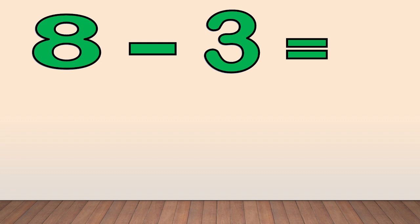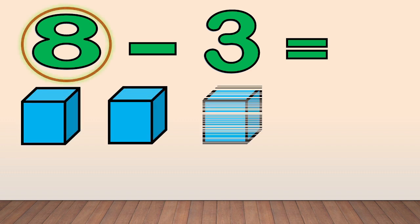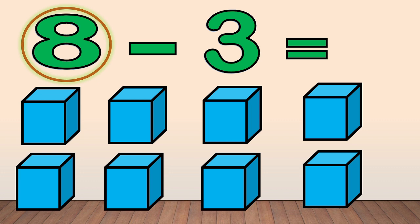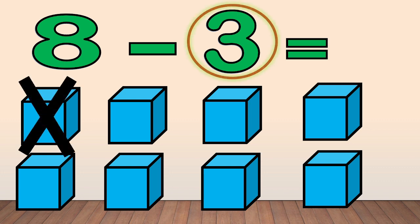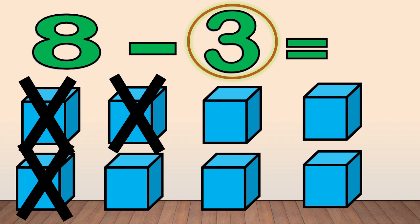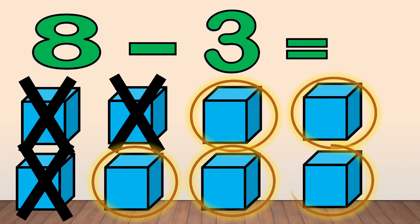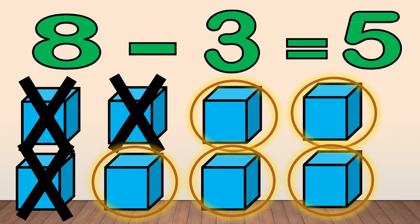Now, draw boxes equal to the minuend — that is 8. 1, 2, 3, 4, 5, 6, 7, 8. Next, cross out the boxes equal to the subtrahend — that is 3. 1, 2, 3. Now, count the remaining boxes: 1, 2, 3, 4, 5. So, the answer is 5. 8 minus 3 equals 5.